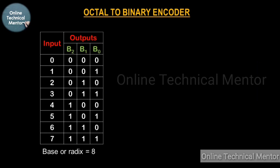In my previous videos I have shown you how to design an encoder circuit. Here I will show you how to design an octal to binary encoder. As you already know, in the octal system there are eight distinct digits, 0 to 7, and its radix or base is 8. The highest digit in this system is 7, and its binary representation is 111. All numbers less than 7 are represented in 3 bits, so 0 is represented as 000, 1 is represented as 001, and so on.